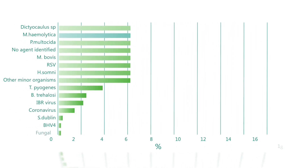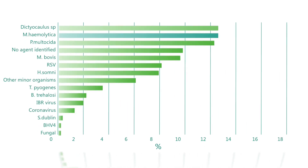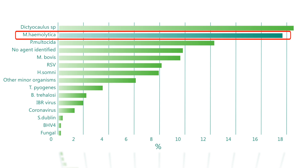What causes bovine respiratory disease in calves? Often there can be mixed infections. It can involve viruses such as RSV, PI3 and coronavirus, bacteria such as Mannheimia haemolytica or Pasteurella multocida, and also parasites such as lungworm, Dictyocaulus viviparus. Mannheimia haemolytica is the number one bacterial agent associated with bovine respiratory disease in calves in Ireland.